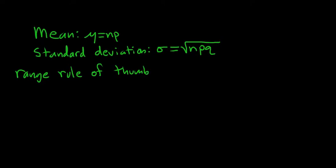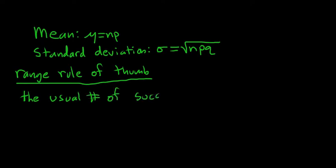It basically says the usual number of successes are between the following two numbers: μ minus 2σ and μ plus 2σ. So anything between these numbers is usual and expected.